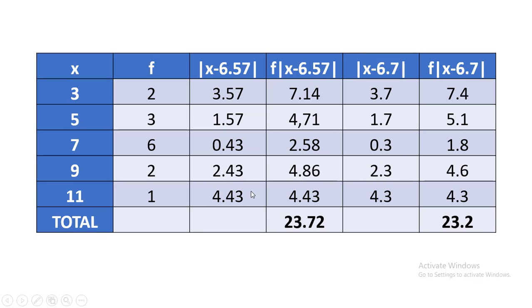Next, we multiply the absolute deviation column by frequency: 2×3.57 = 7.14, 3×1.57 = 4.71, 6×0.43 = 2.58, 2×2.43 = 4.86, and 1×4.43 = 4.43. The total of all these values in this column is 23.72.